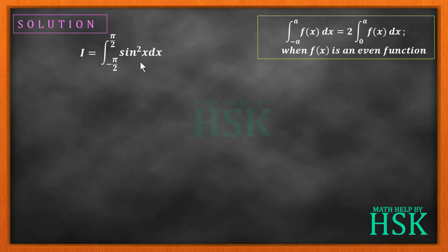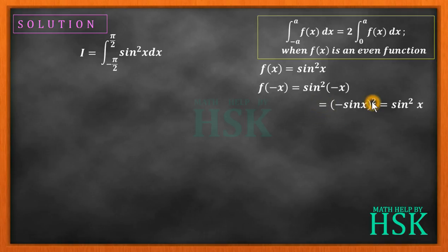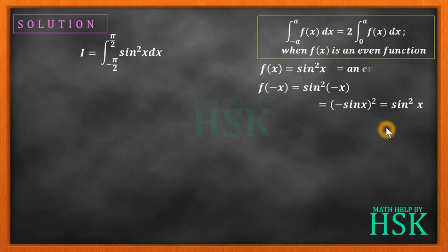But we should justify that sin²x is an even function. We take f(x) = sin²x. If we calculate f(−x), this equals sin²(−x), which can be written as (−sin x)² since sin(−θ) = −sin θ, giving sin²x. So f(x) = f(−x), which means f(x) is an even function.